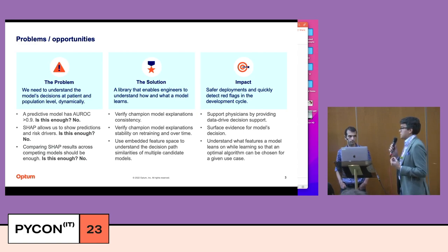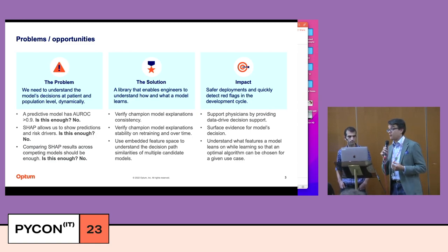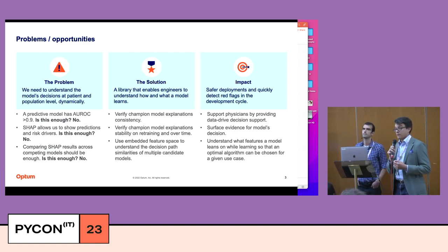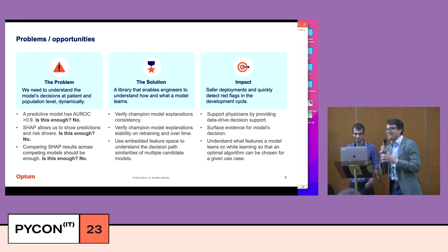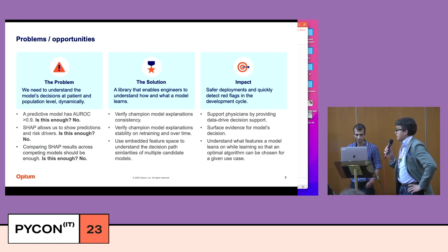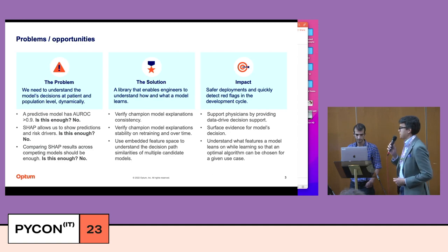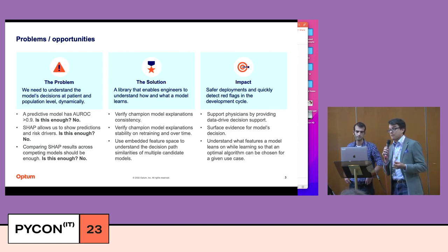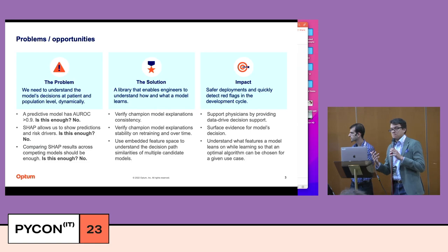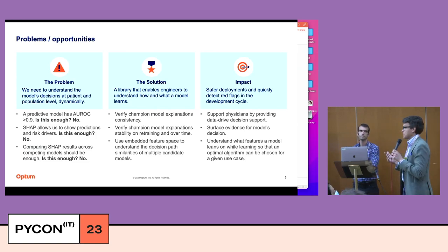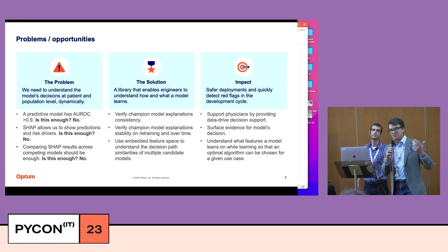We also wanted to address a very important issue when it comes to this sort of algorithm: trustability. How much can you trust the algorithm? Suppose a model has a very high score — say 0.9 or 0.95 on the area under the receiver operating characteristic. Is that enough? Not really. It doesn't tell you everything you need to know. It just tells you that the model may be faring better than comparable models.